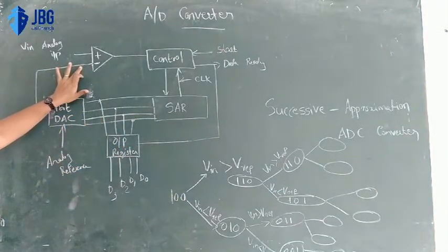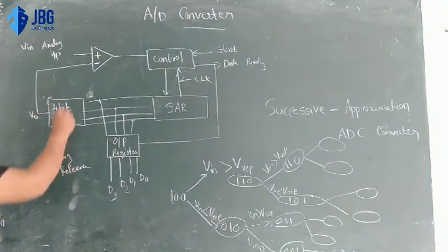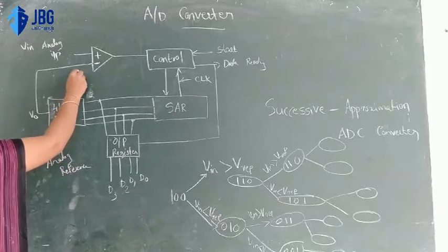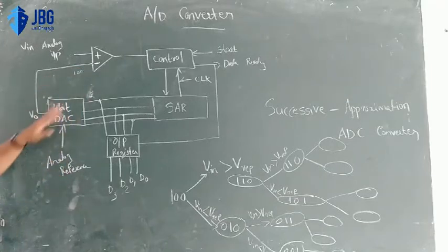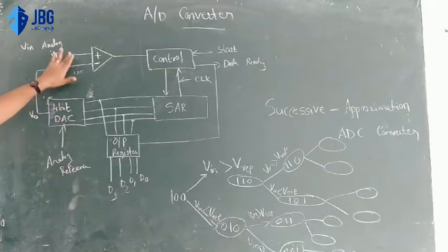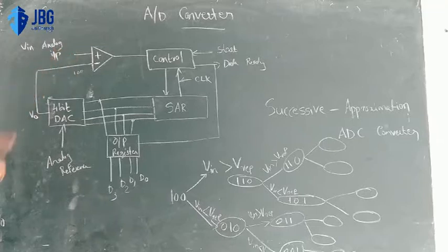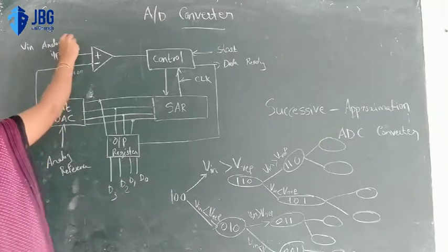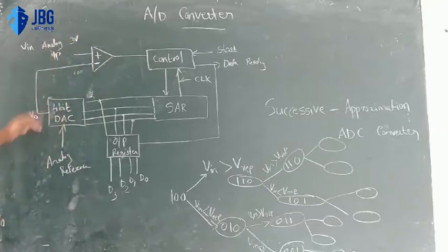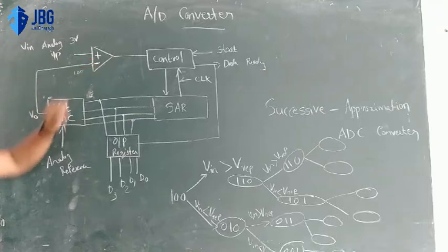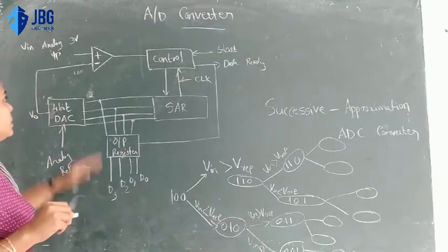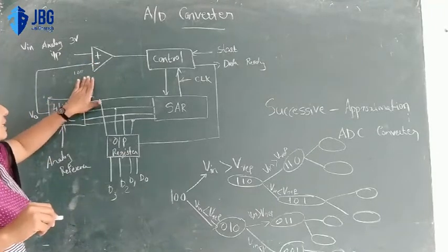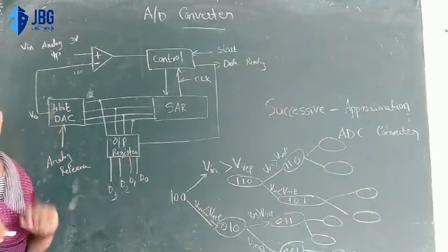We start with 1, 0, 0. Then 1, 0, 0 again with the same input. Then at step 3 we have 3, 0, 0. We compare it to the other value and compare it to the negative pulse.